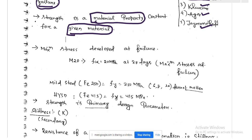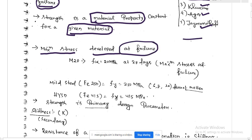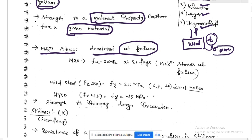Strength can be defined as the maximum stress developed at failure. Suppose you keep on loading a material — say wood — and keep increasing the load. At some particular point, the wood is going to fail. The stress level at the corresponding failure time — that maximum stress developed due to increasing load — is called the strength of the material.